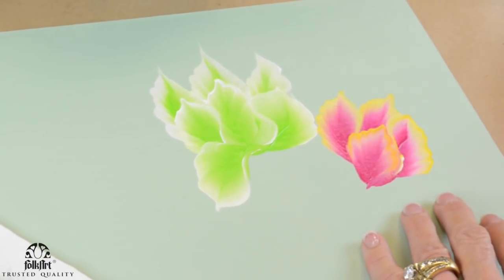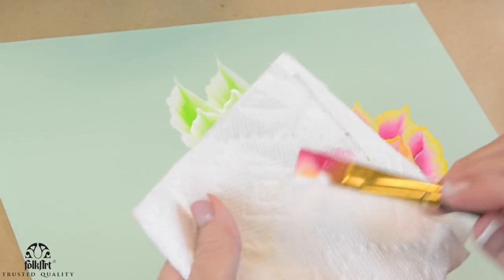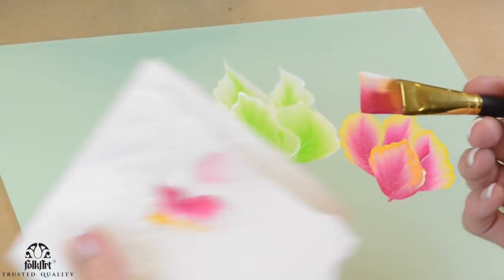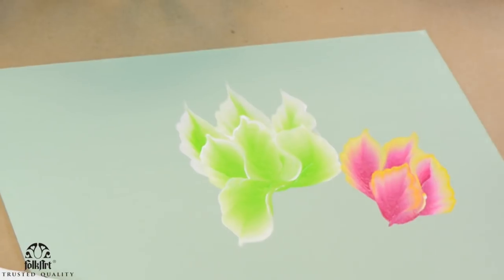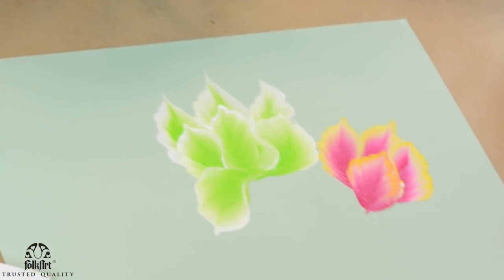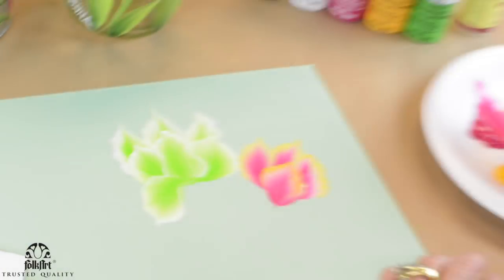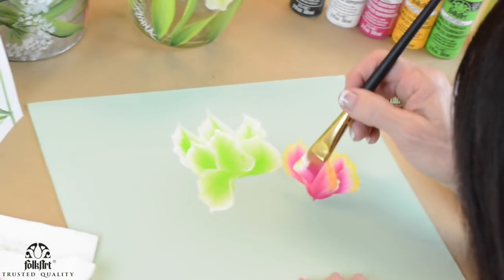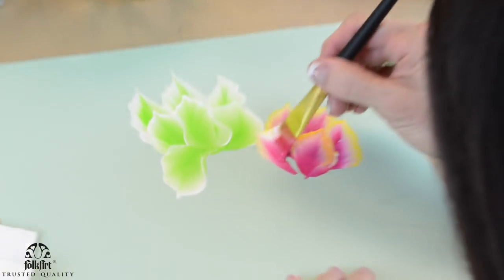Now what if you pick up the wrong color? I just want you to see - I picked up the wrong color. You just wipe it, no water, and then go pick up the color again, because the paint inside this brush is still what we started with even if you picked up the wrong color.